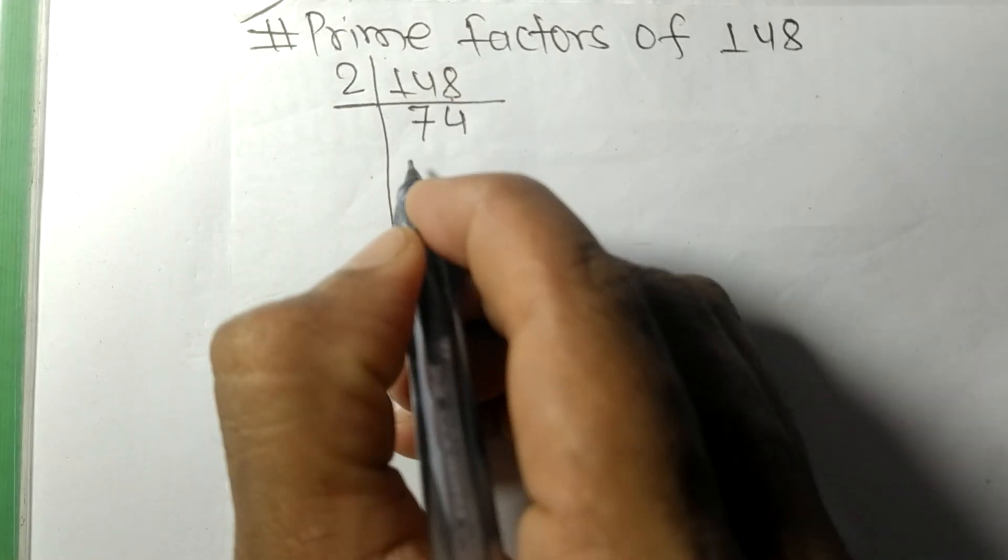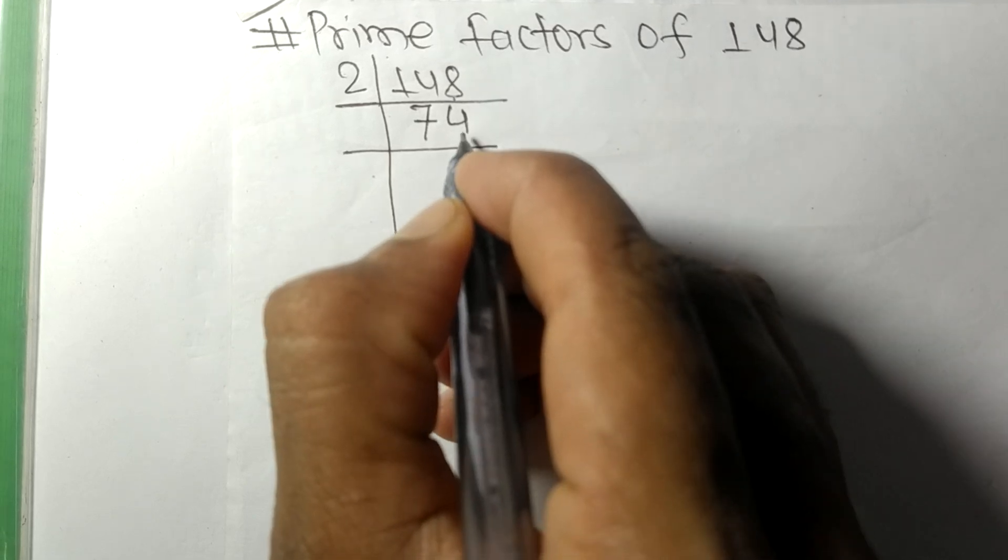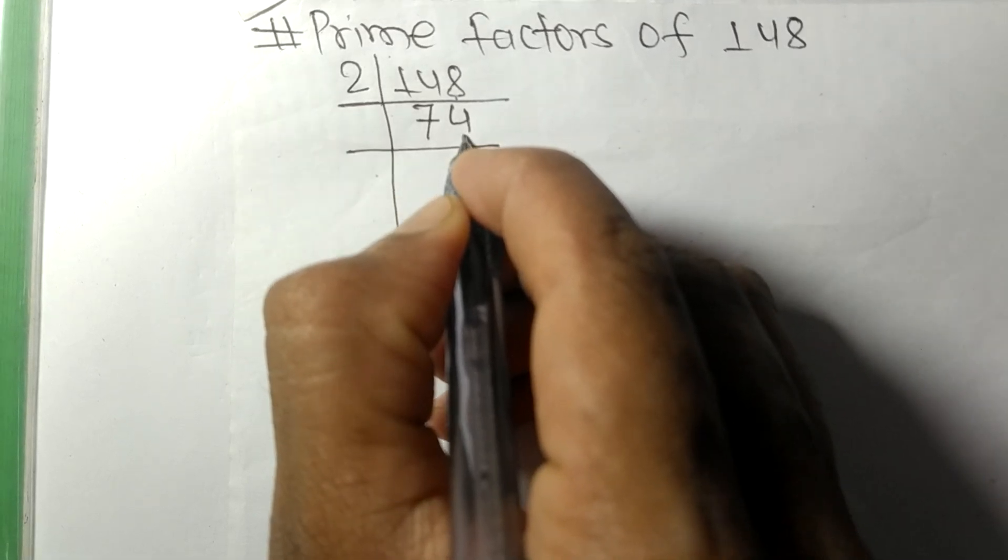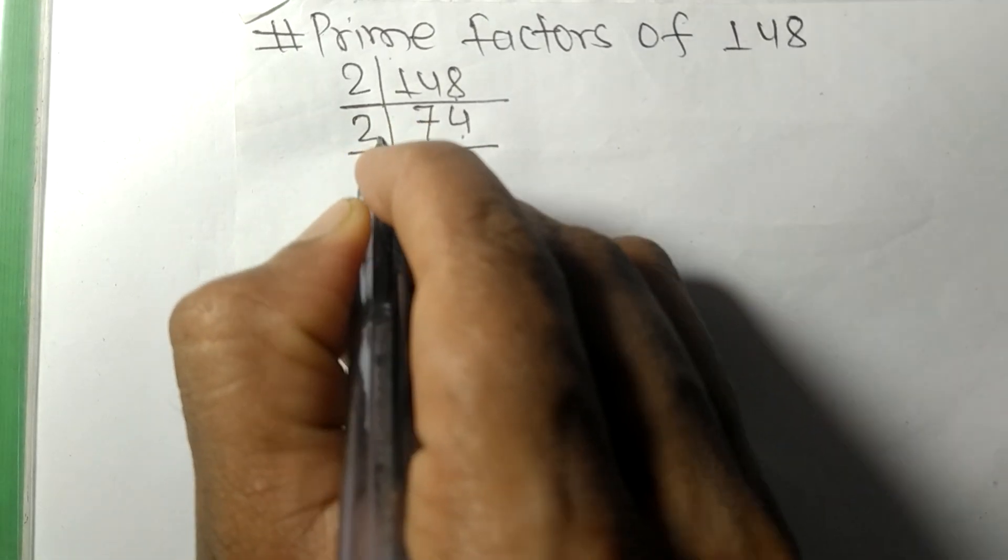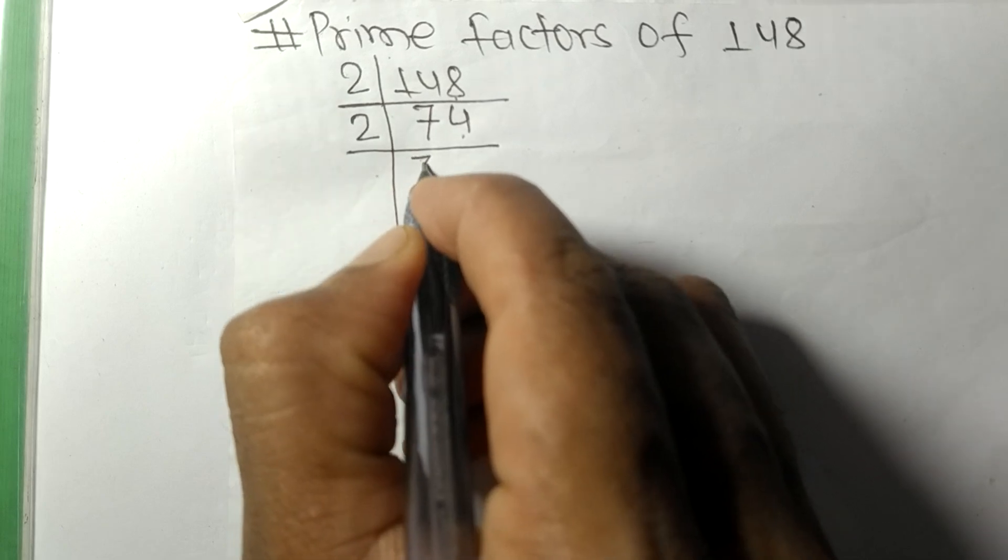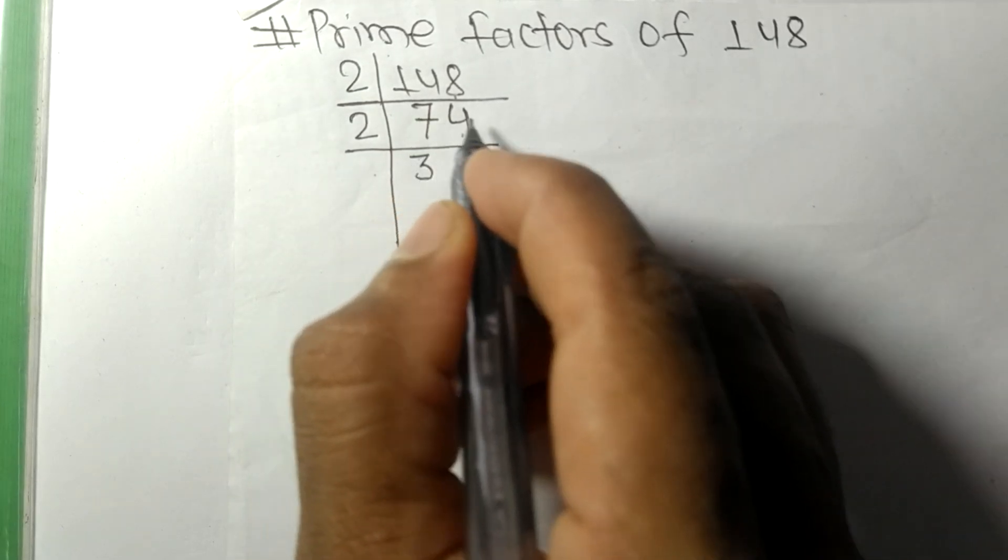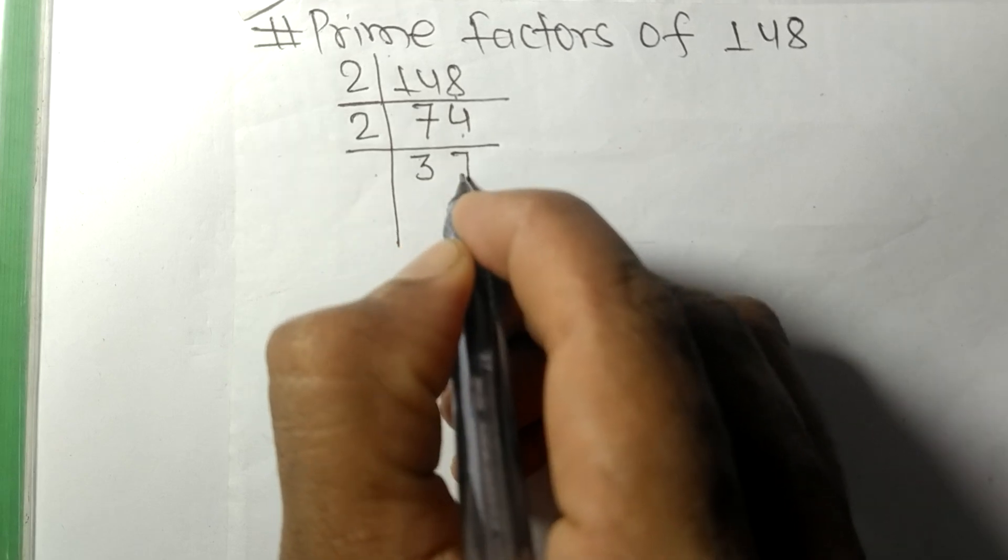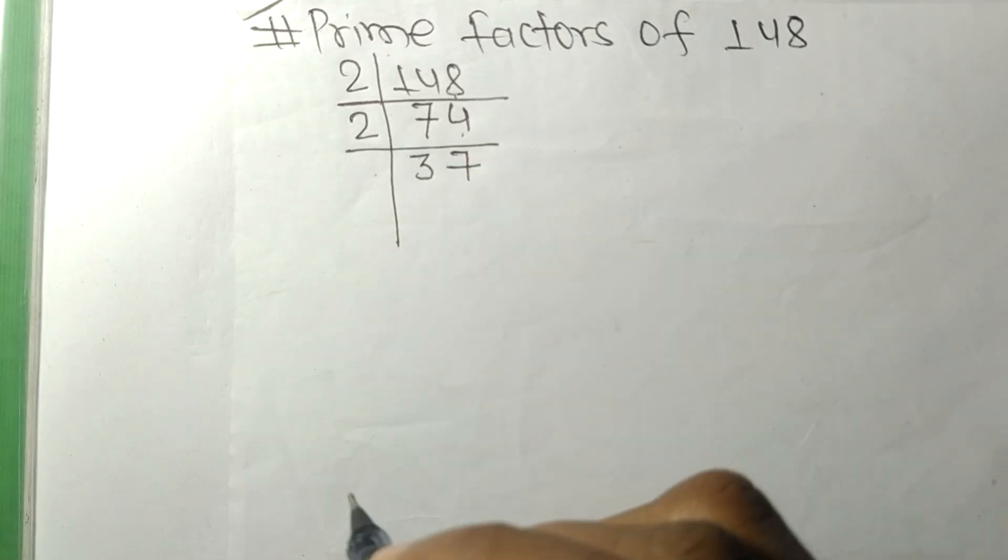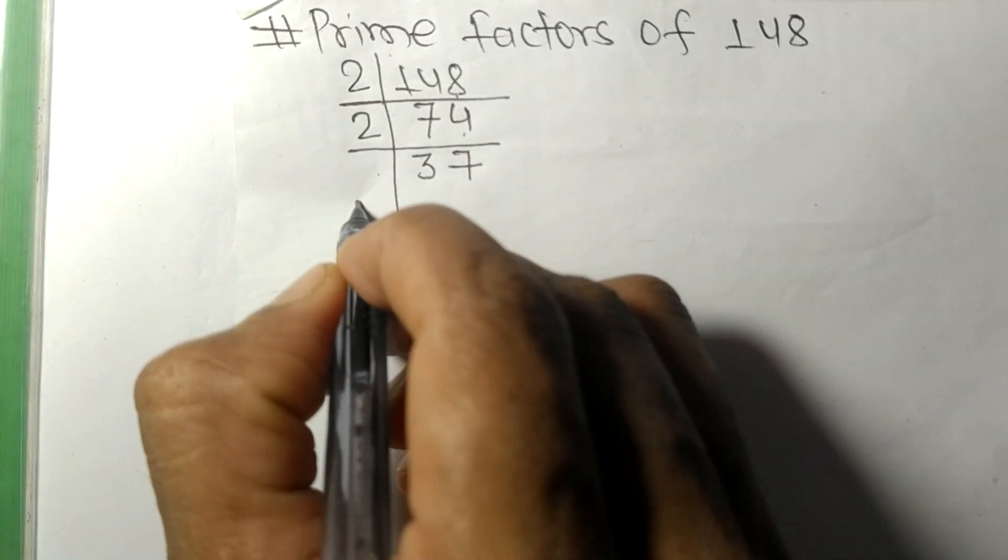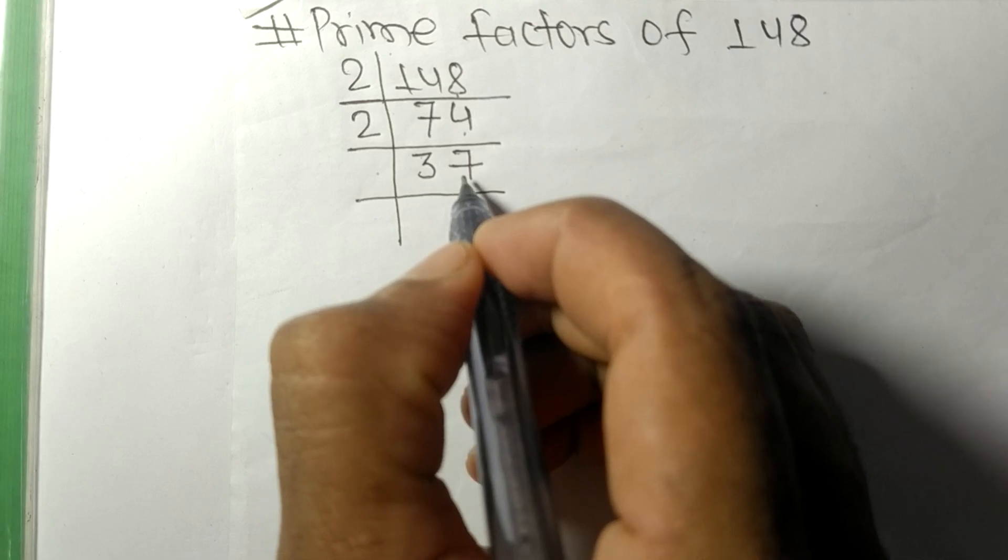Again we have an even number, 74, so it is divisible by 2. 2 times 3 is 6, remainder 1, so 14. 2 times 7 is 14. Now we have here 37.